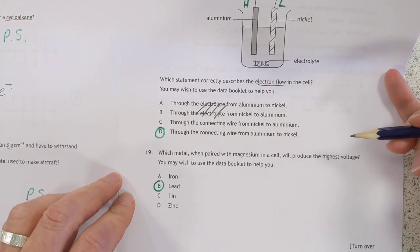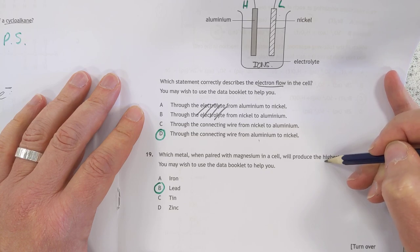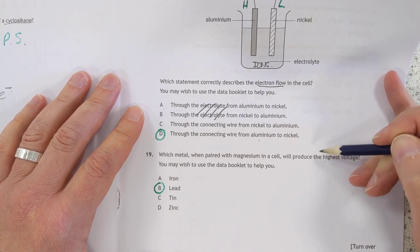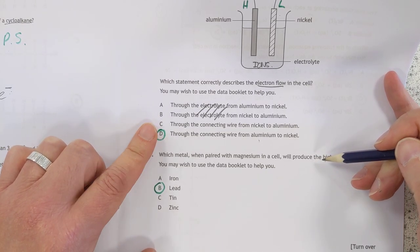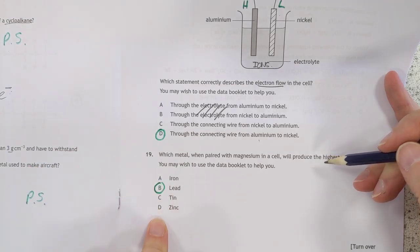And number 19. Are they testing the same thing twice here? Highest voltage will be the furthest. No, not quite the same thing. No, fair enough. That was direction of flow. This is the size of the voltage. So you want the one, the metal here, that's furthest away from magnesium. And it will produce the highest voltage. The answer to that is lead.